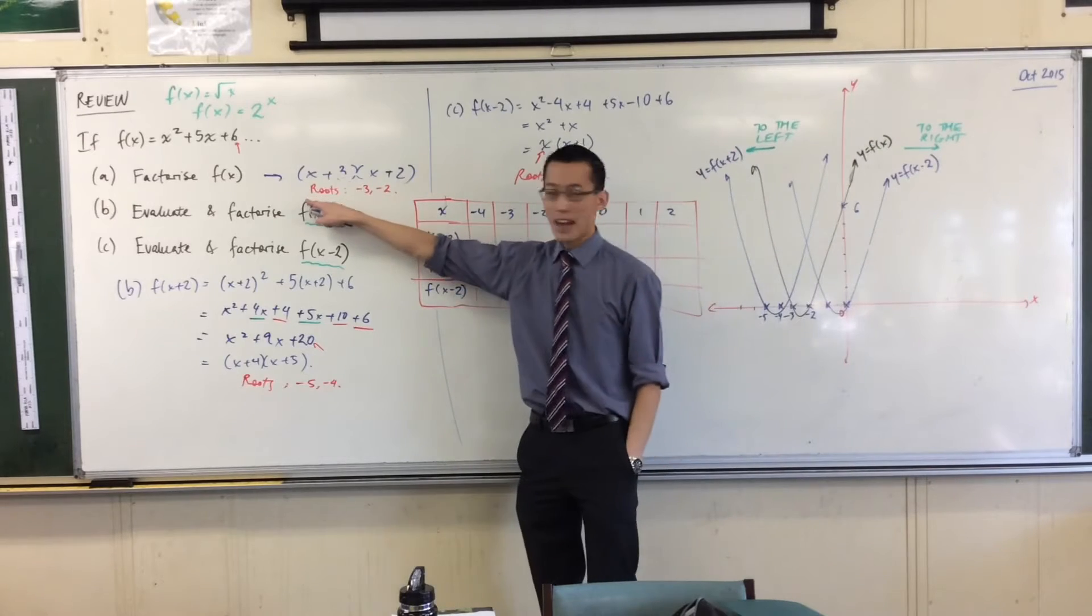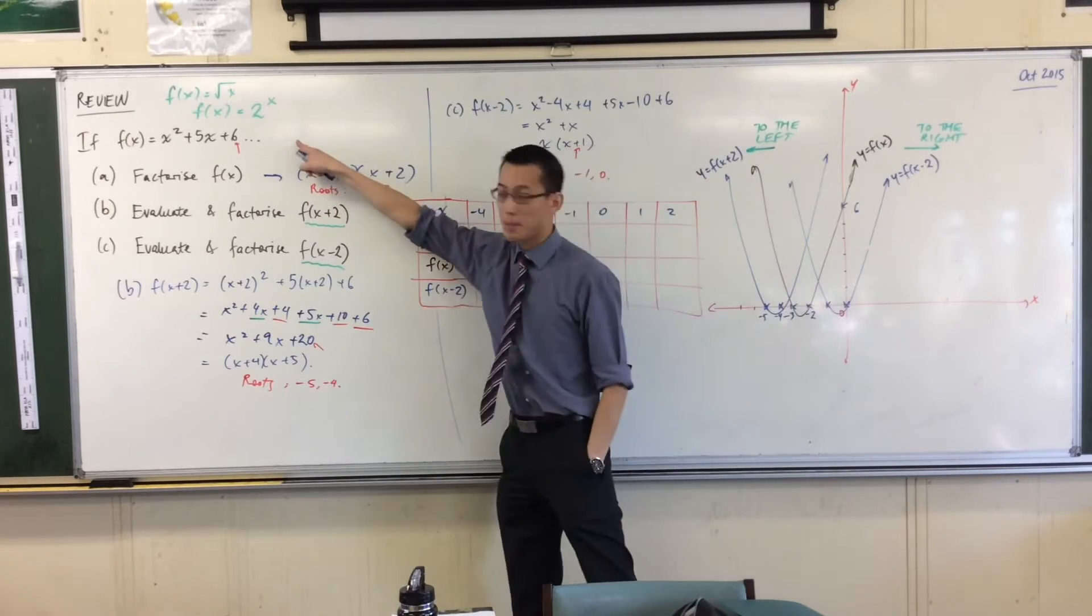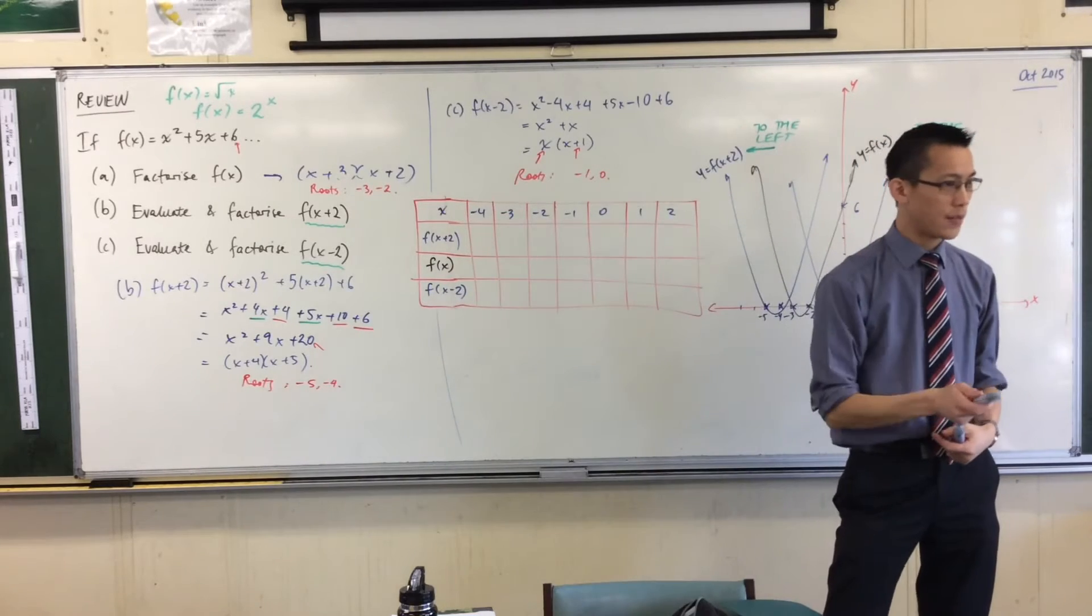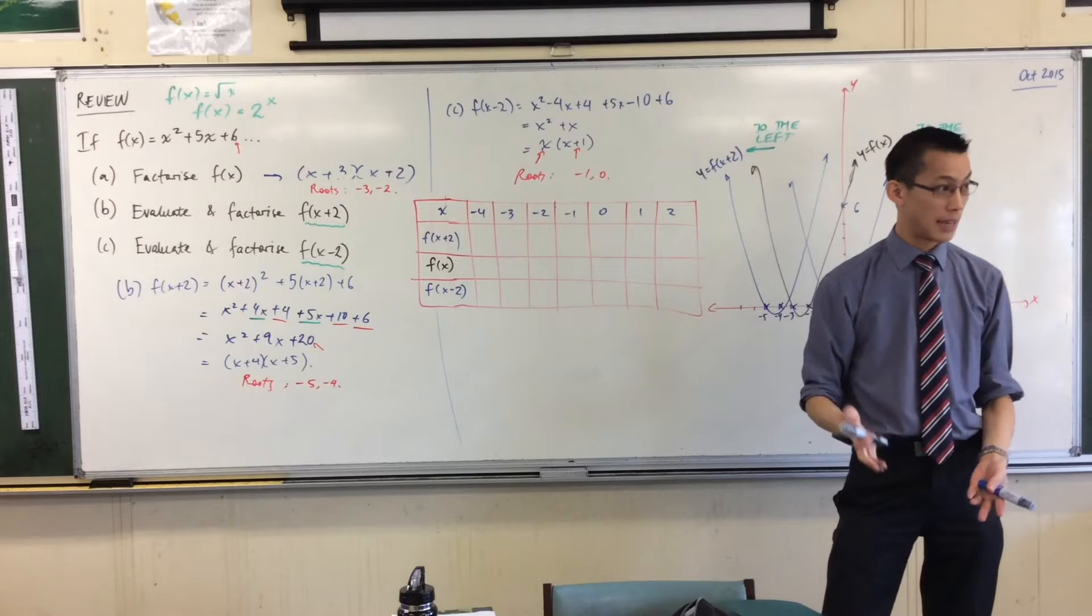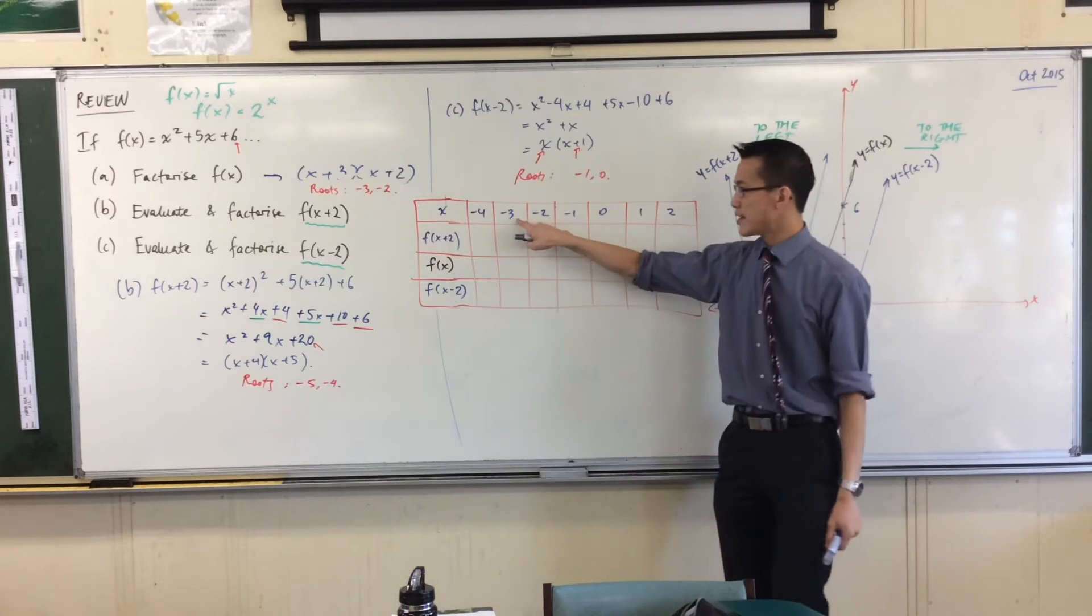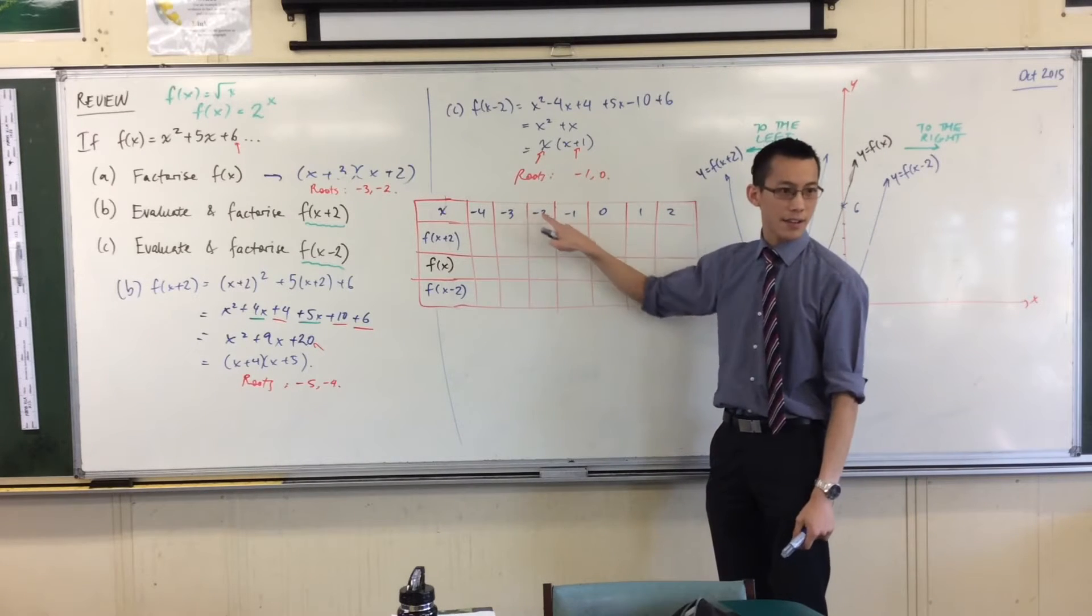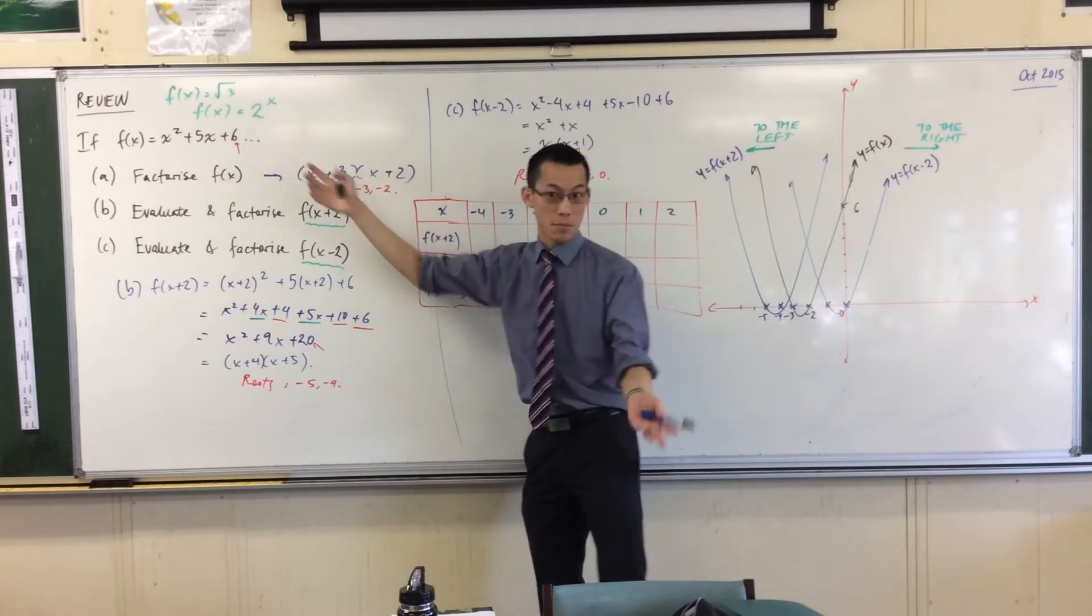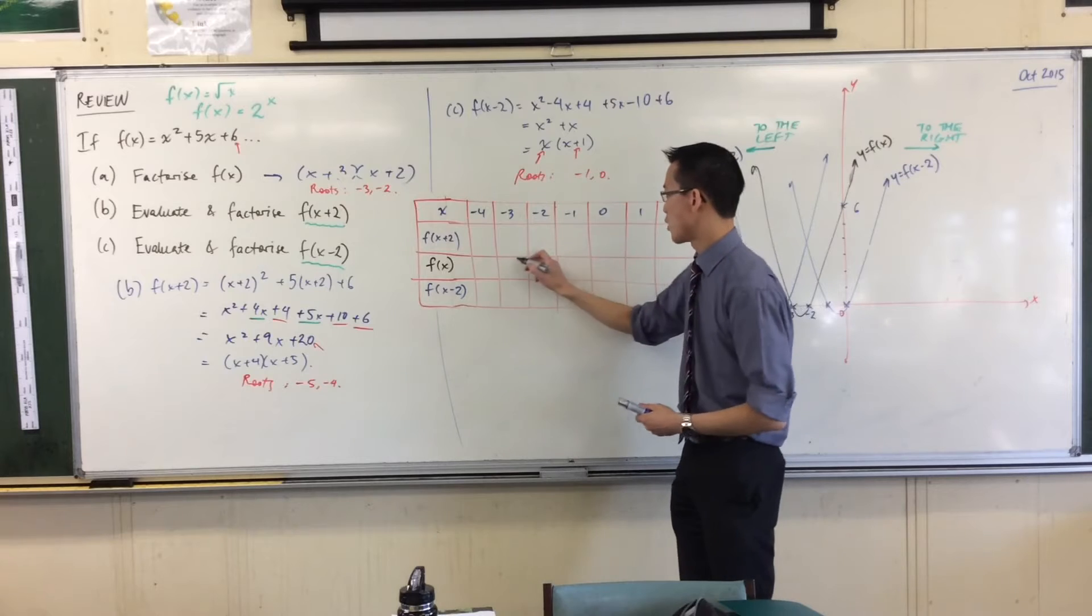Let's think about our original graph. Now, remember you told me the roots of that original graph, x squared plus 5x plus 6, I've done it in black so it's a bit different from the others. The roots of it are negative 3 and negative 2, okay? Negative 3 and negative 2. What that means is if your x values are negative 3 and negative 2, if you stick them into here, you'll get 0. That's what it means for them to be the x intercepts.